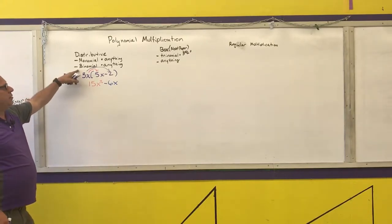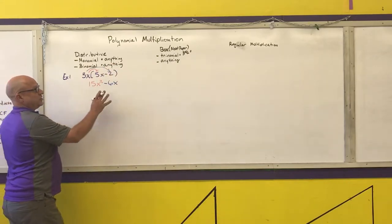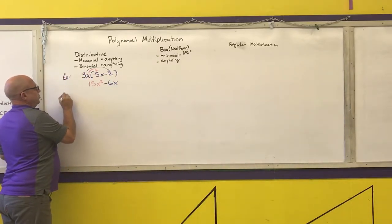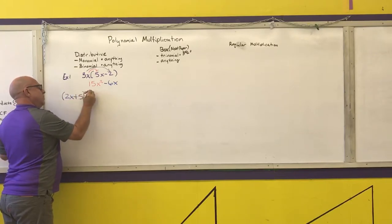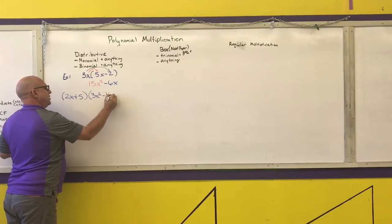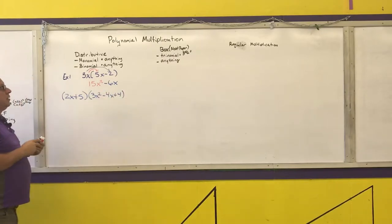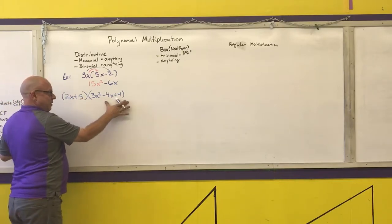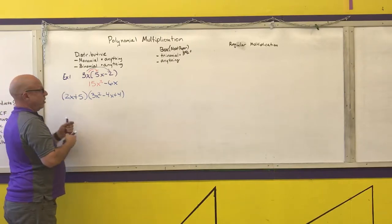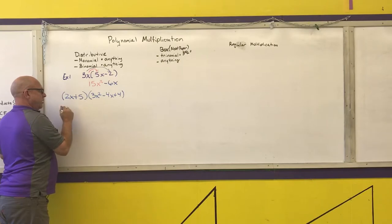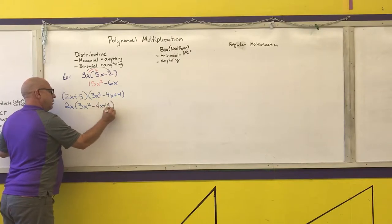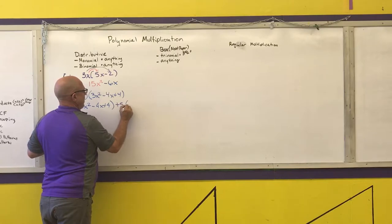Now I'm going to do a binomial times a trinomial: (2x + 5)(3x² − 4x + 4) — the same problem for all three methods. For the distributive method, the 2x needs to be multiplied by the whole trinomial, and then the 5 needs to be multiplied by the whole trinomial. So this needs to be rewritten as 2x times the whole thing, plus 5 times the whole thing.